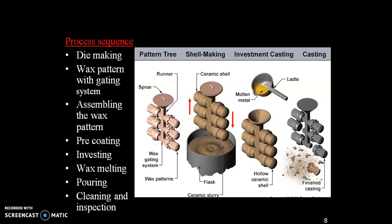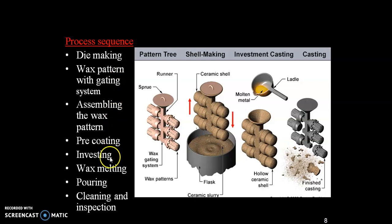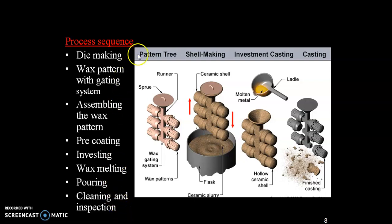This is the process sequence of investment casting. The steps are: die making, wax pattern with gating system, assembling the wax pattern, pre-coating, investing, wax melting, pouring, cleaning and inspection. The overall process involves pattern tree and shell making, investment casting, and final casting.